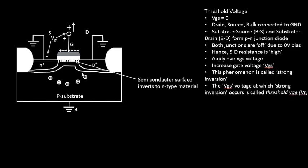Coming back to the n-MOSFET discussion: we applied a gate voltage, saw the formation of the depletion region because the gate voltage repels holes from the channel area, and in the process the holes leave behind negative charges. This keeps happening as you increase the gate voltage until all the holes in the channel area are completely repelled by the positive gate voltage.